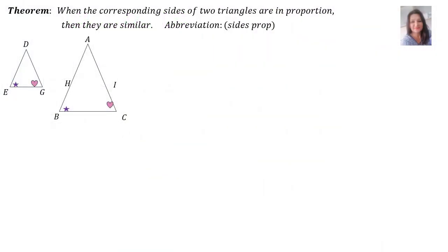We have a theorem that states: when the corresponding sides of two triangles are in proportion, then they are similar. There is an abbreviation that you may use: sides proportion.